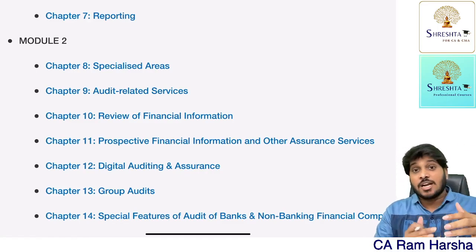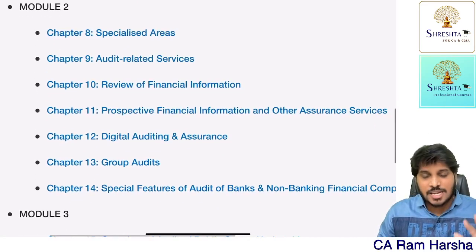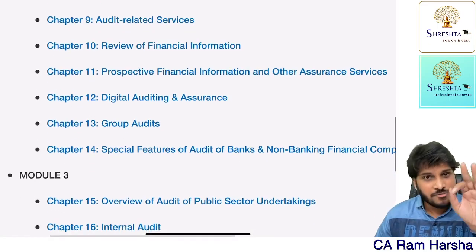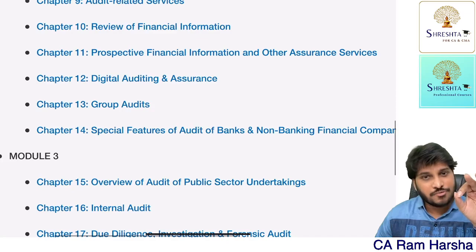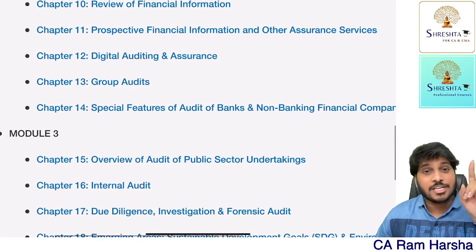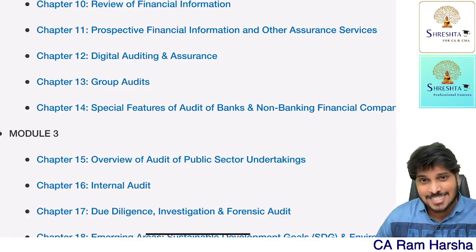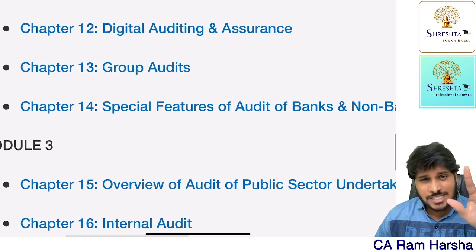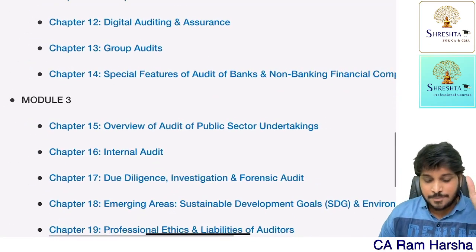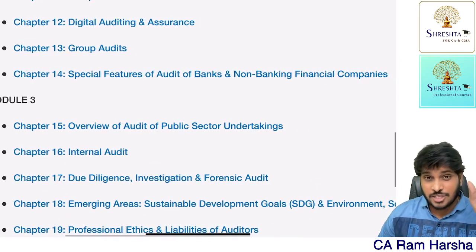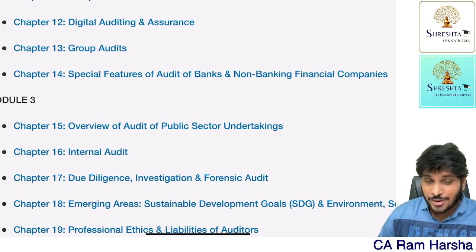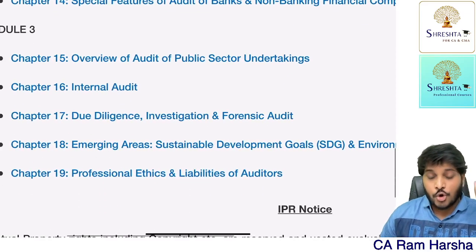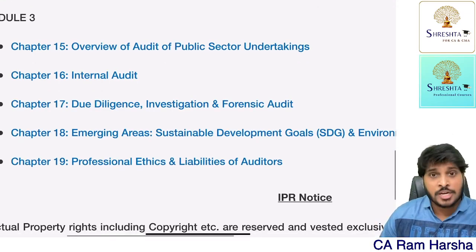All these topics were there in our CA Final existing scheme as part of company audit, audit report, and standards — of course company audit itself is not there now. Next, specialized areas: 800 series audit, related services — 4000 series, review of financial information — 2000 series, prospective financial information and other assurance services — 3000 series, digital auditing and assurance. Don't think it's a new chapter — it's there in the existing chapter on audit in an automated environment. Group audits — that's consolidated financial statements audit (Chapter 13). Chapter 14: special features of banks and NBFCs. Insurance is missing, so it is removed. Then overview of PSU audit — existing syllabus already has PSU audit.